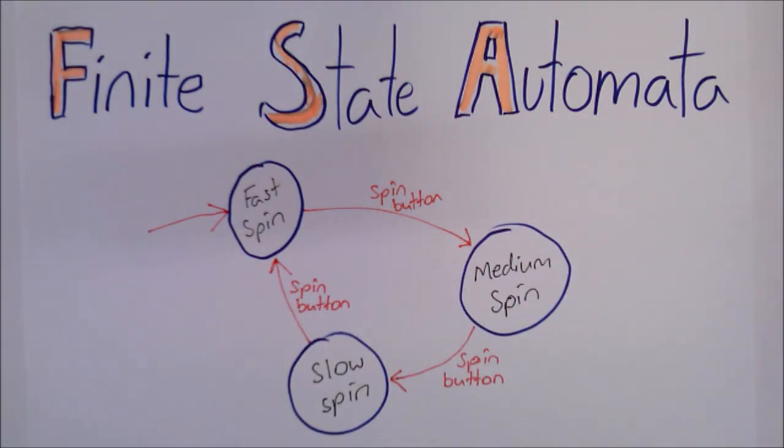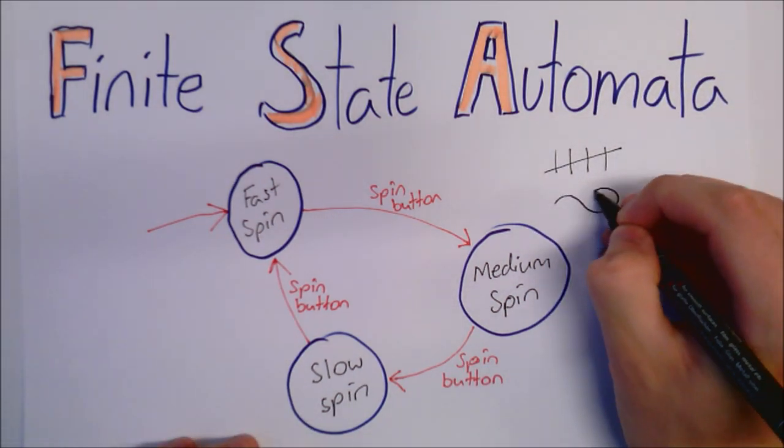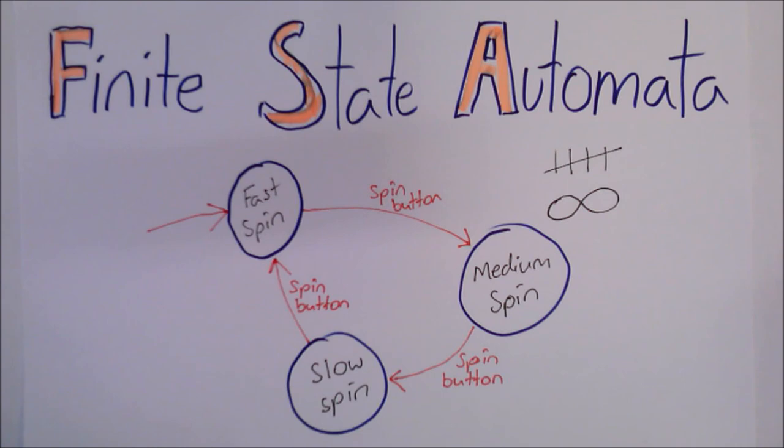So, what do these words mean, Finite State Automata? Finite means that there are a limited number, as opposed to infinite, which means the number is unlimited.